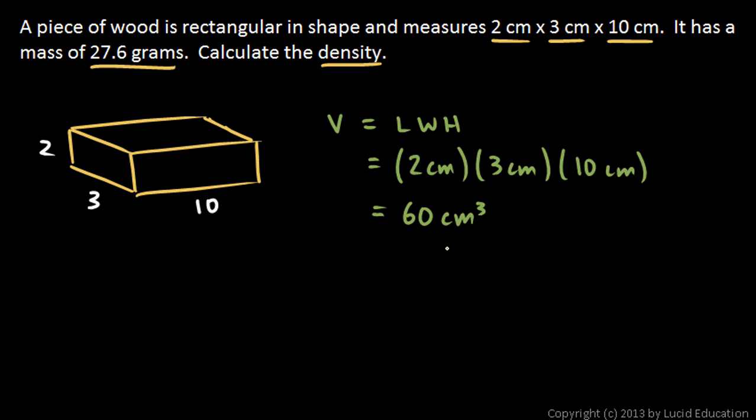And then the density—and density is, remember, typically the symbol for density is the Greek letter rho. Density is mass over volume, and the mass is given, that's the 27.6 grams, divided by the volume which we just calculated, 60 centimeters cubed.